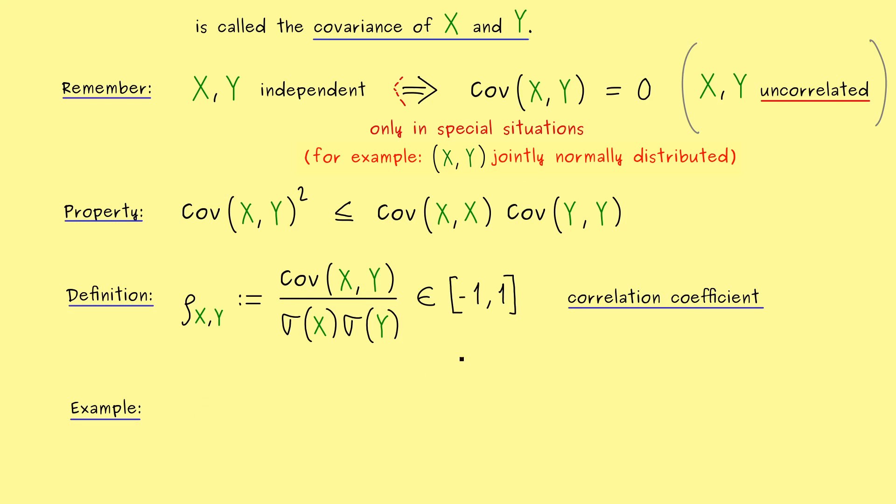Indeed, I want to show you, that uncorrelated variables don't have to be independent. Also this means, for this example, we cannot use normally distributed random variables. However, let's keep it simple, let's choose omega consisting out of three elements. So very simple, and let's call the elements a, b, c.